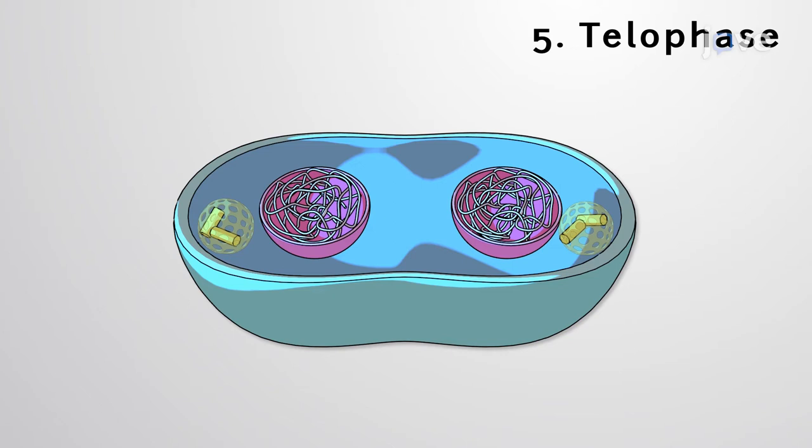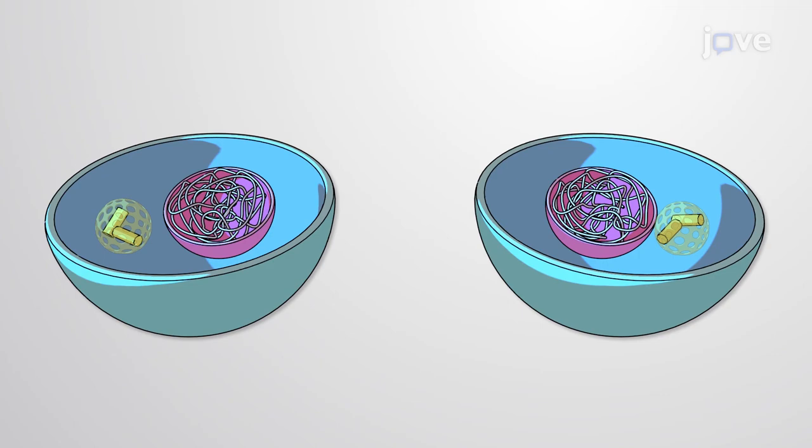During telophase, in a distinct process called cytokinesis, the cell is cytoplasmically divided. Thus, the end result of mitosis is a cell pair genetically identical to their precursor.